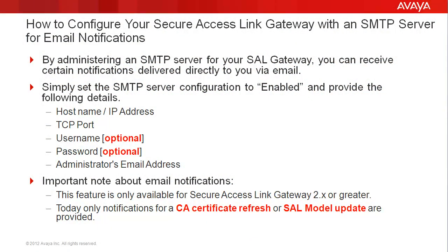By administering an SMTP server for your SAL gateway, you can receive certain notifications delivered directly to you via email. Simply set the SMTP server configuration to enabled and provide the following details: the hostname or IP address of your email server.